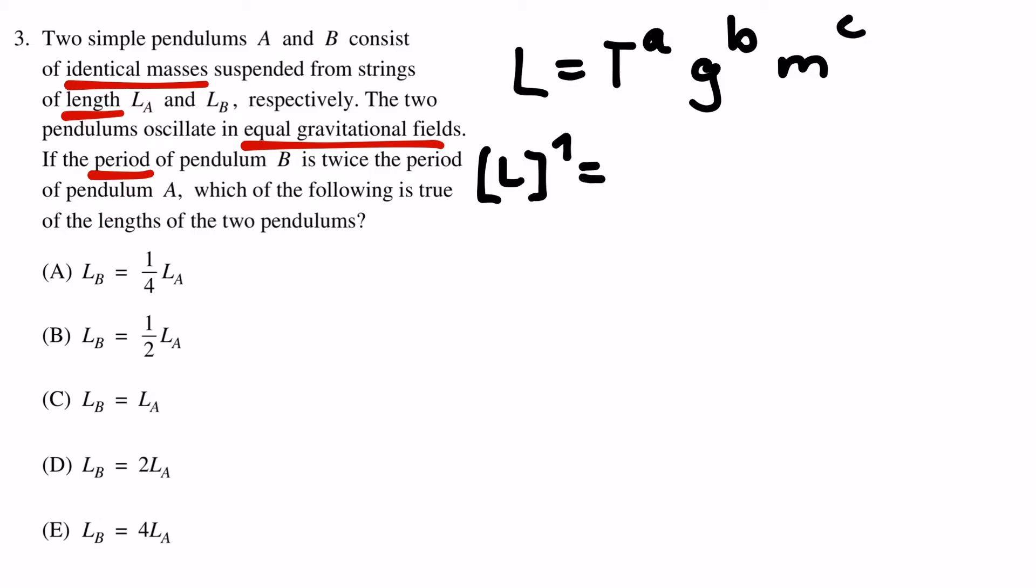In the left-hand side, we have length. On the right-hand side, we have time to the power of a, length over time squared to the power of b, and mass to the power of c.